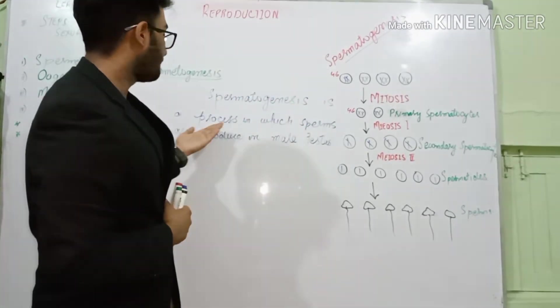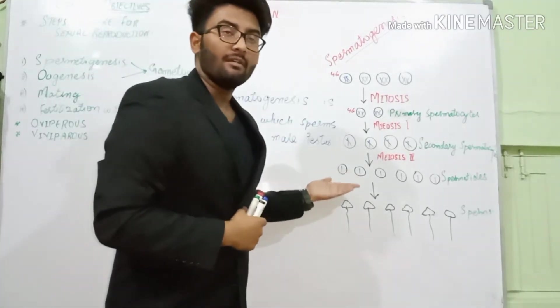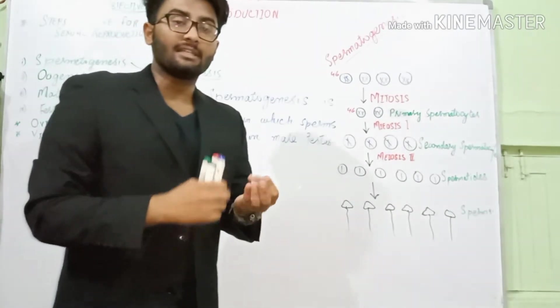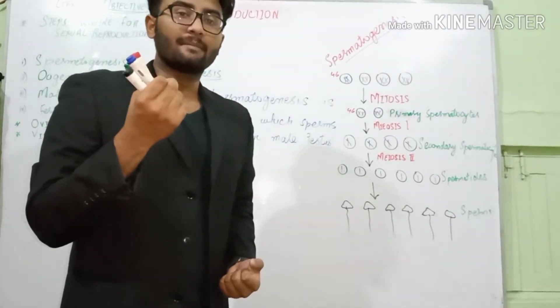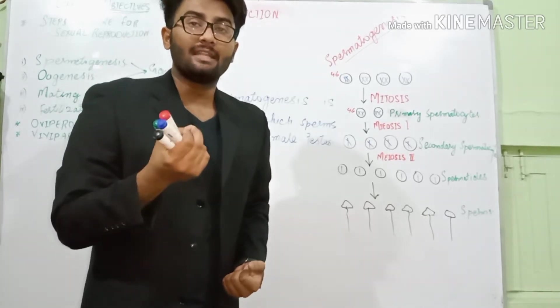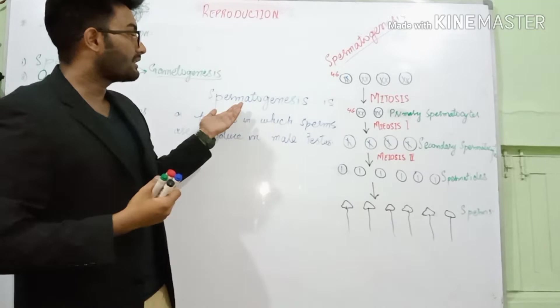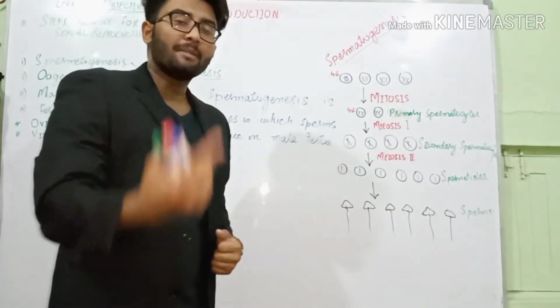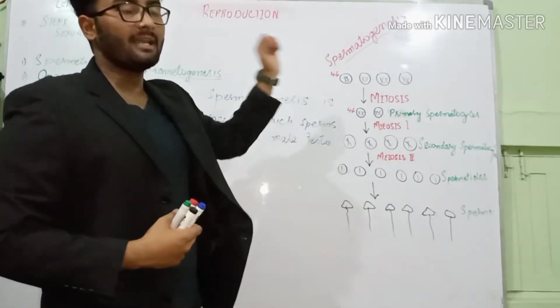Spermatogenesis is a process in which sperm are produced in male testes. The testes are the reproductive organs of male. How the complete process is performed? Here is a diagram of the spermatogenesis. First of all, body produces germ cells.